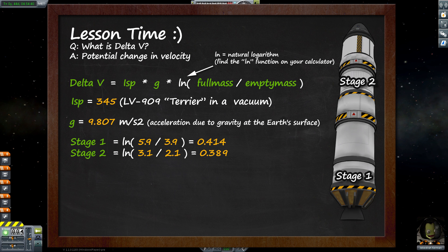What we're going to do is work out the natural logarithm for each stage. We take our full mass and our empty mass and divide those together. So in our first stage that was 5.9 divided by 3.9, and this gives us a value of 1.5128. We then run our ln function on top of that, which gives us 0.414.